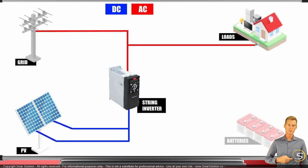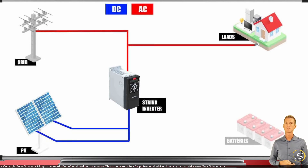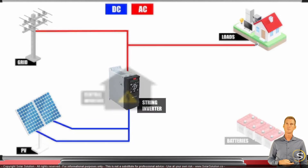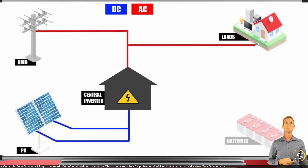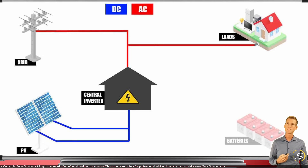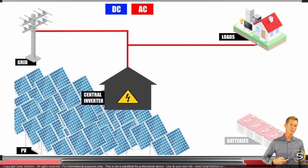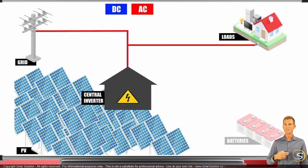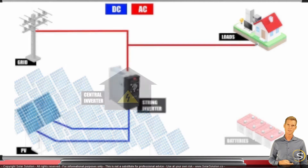The string inverter is often used for systems you will typically install. There's also a much larger version called a central inverter, which is normally only used on a solar power plant because it's a really large capacity inverter that can deal with a very large array of solar panels. This is probably not an option for you, but it's good to be aware of the difference between a central inverter and a string inverter.